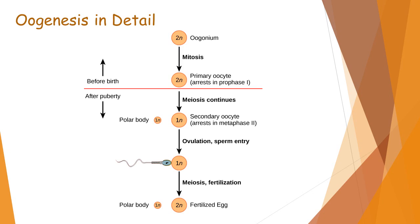The primary oocyte completes meiosis first and undergoes asymmetrical cytokinesis to give rise to two unequal cells: the smaller one is the first polar body and the larger one is the secondary oocyte. Both of these cells are haploid. The secondary oocyte then undergoes meiosis second, but this meiosis second also gets arrested, this time in metaphase second stage.